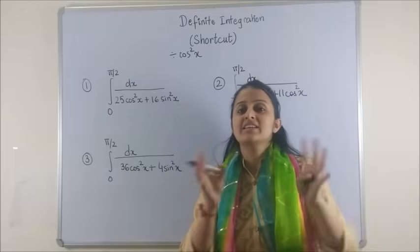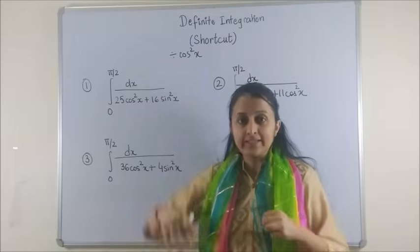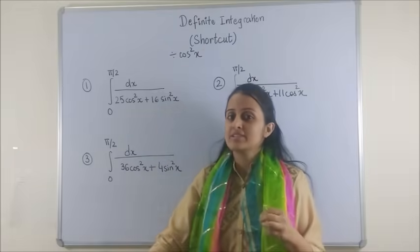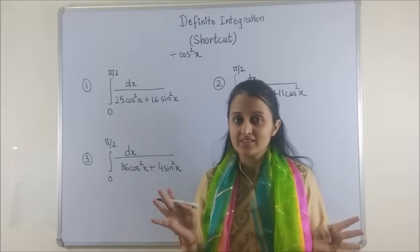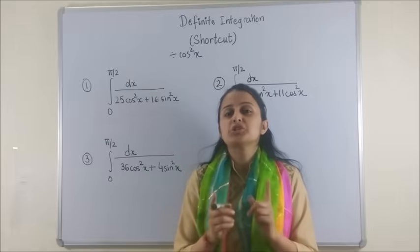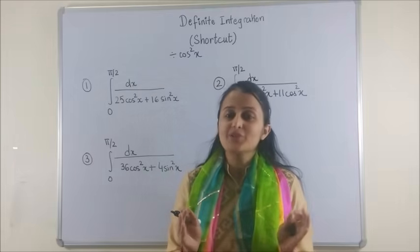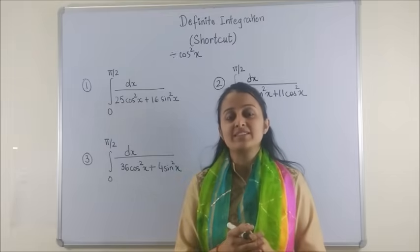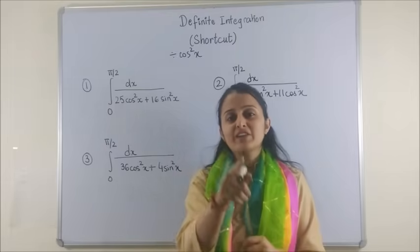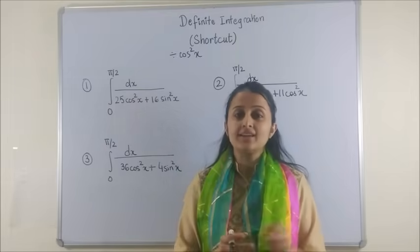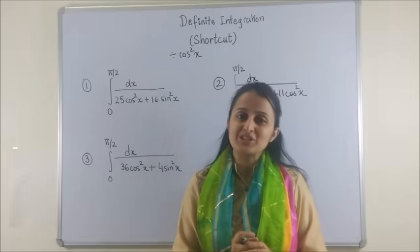so secant square x dx becomes dt and that whole lengthy process plus your special integrals. What if I give you a shortcut to solve this question? It is very useful not only for your competitive exams but also to verify your final answer even if you are following the traditional method.